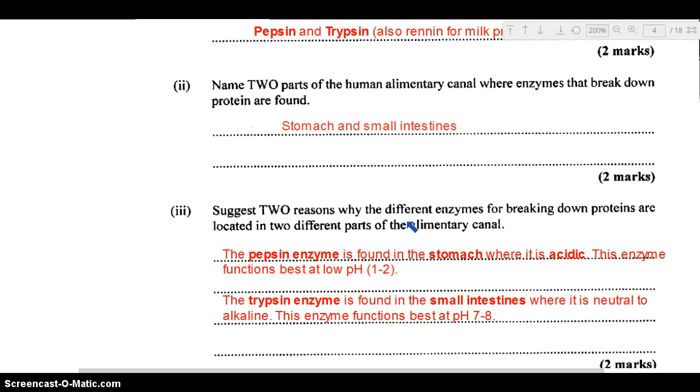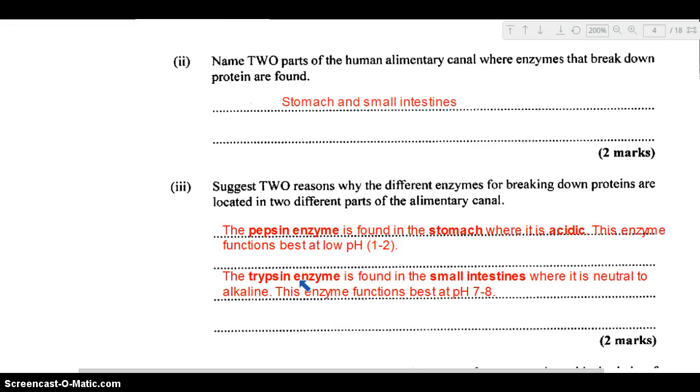Part three: suggest two reasons why the different enzymes for breaking down proteins are located in two different parts of the alimentary canal. The pepsin enzyme is found in the stomach where it is acidic. The enzyme functions best optimally at a low pH between one to two. Within the stomach where you have the hydrochloric acid, that gives it that acid environment, so the pepsin would work best under those conditions. On the other hand, the trypsin enzyme would be found in the small intestines, a totally different environment. We have a neutral to alkaline pH, roughly between seven to eight. The trypsin enzyme works best under these conditions, these neutral to alkaline conditions.